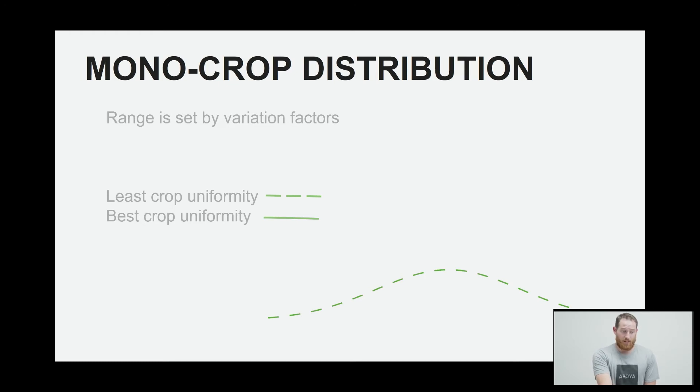On the bottom right, we've got a curve that's showing the least crop uniformity. So it's got a wide standard of deviation. The middle chart is showing a slightly more uniform crop, and then that final solid line is indicating crop that has a high uniformity and a very small standard deviation. So those plants are weighing the same, have similar quality, and there's not a big difference across the room.